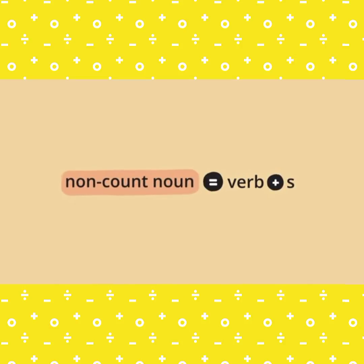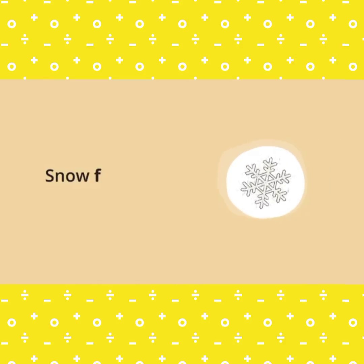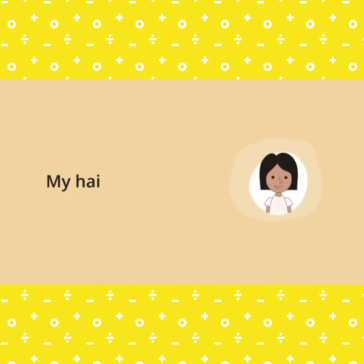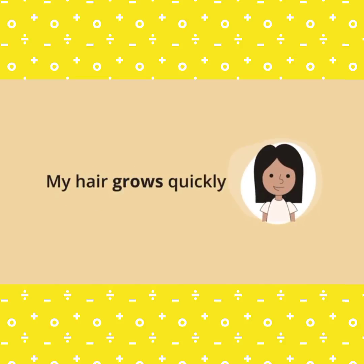We also use verb plus S when the subject is an uncountable noun. For example: Snow falls from the sky in winter. My hair grows quickly.